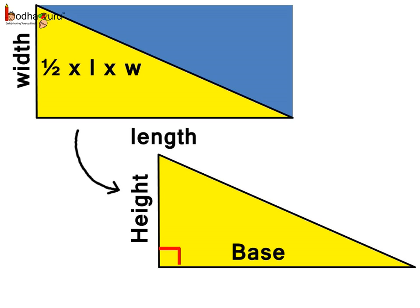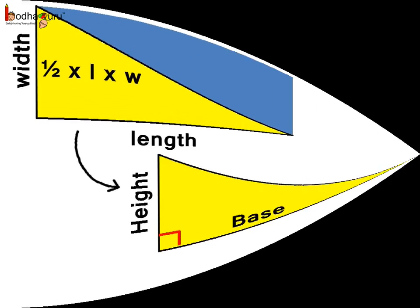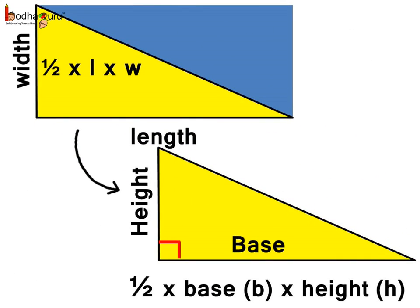How? The distance between the base and the opposite vertex is called the height of the triangle. Thus the width of the rectangle is the height of the triangle. So we can say the area of this right angle triangle is half base multiplied by height.